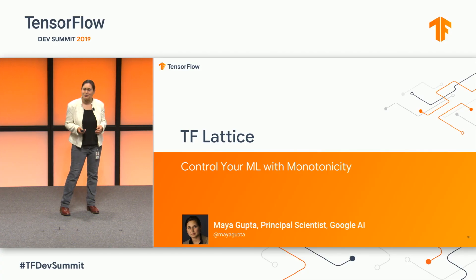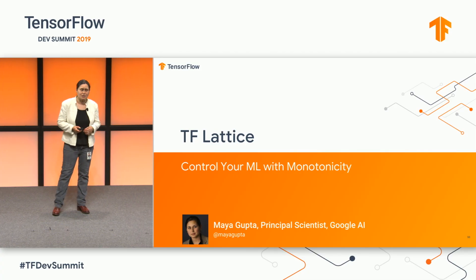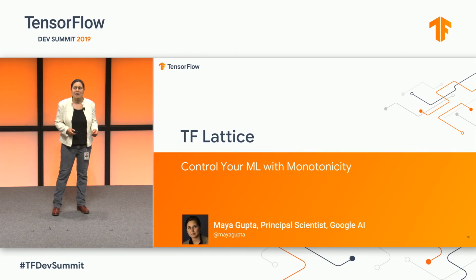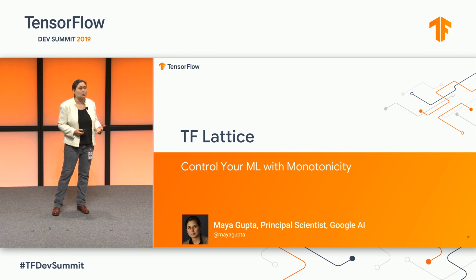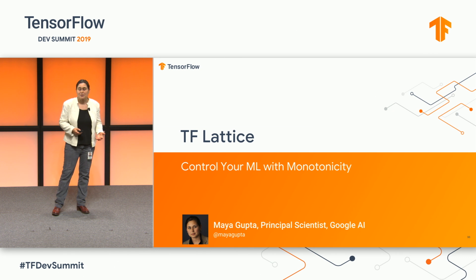This is the same technology that we use at Google for many dozens of our production models, where we care about the model behavior and we need to make sure that we can guarantee it's working sensibly everywhere. In particular, we're going to show how you can control your models to have monotonicity.